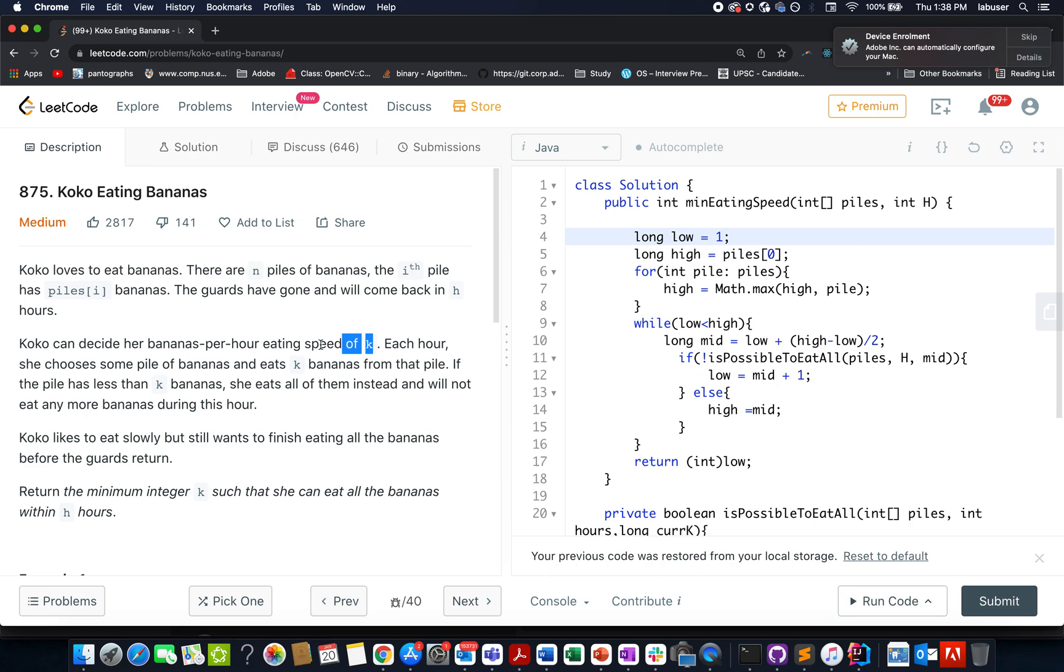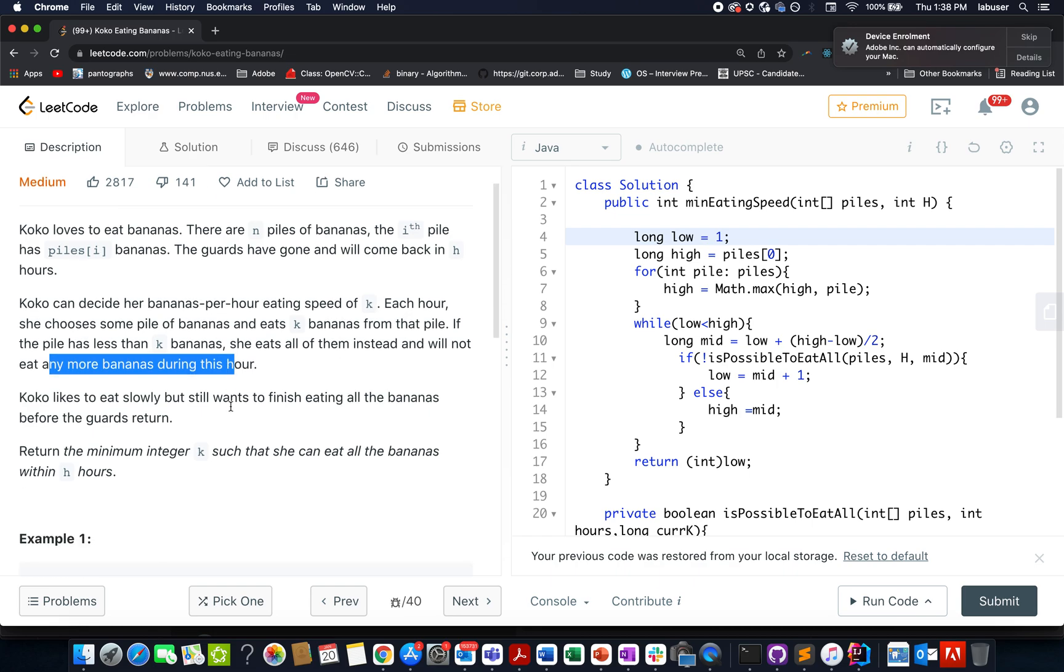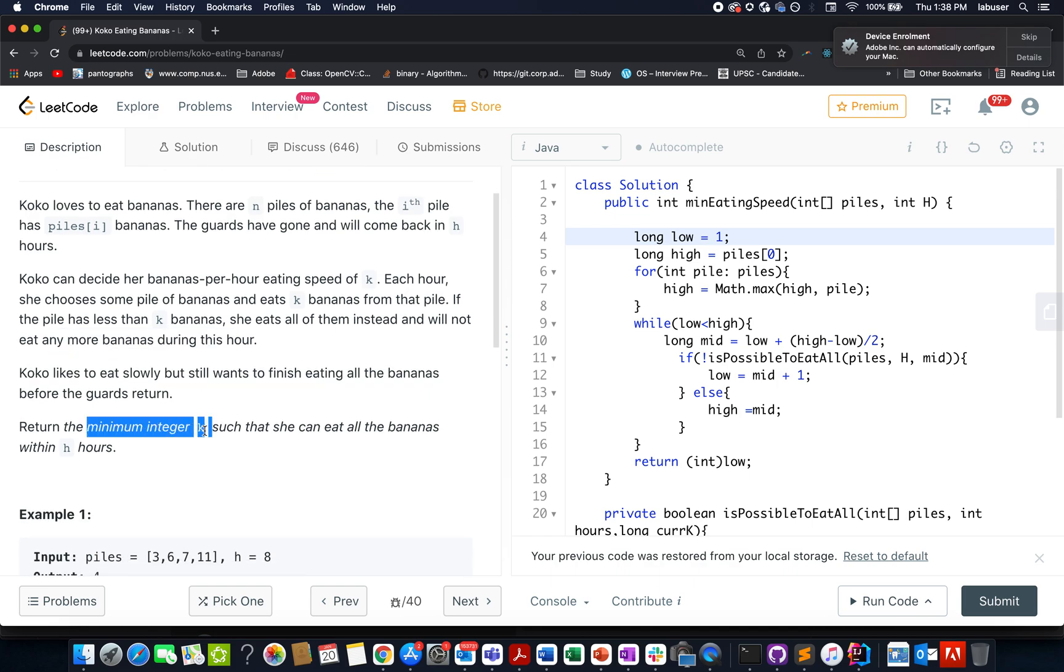There is a person named Koko who decides to eat bananas per hour at the eating speed of k. Each hour she chooses some pile of bananas and eats k bananas from that pile. If the pile has less than k bananas, she eats all of them instead and will not eat any more bananas during that hour.